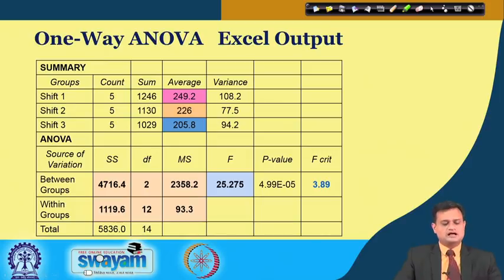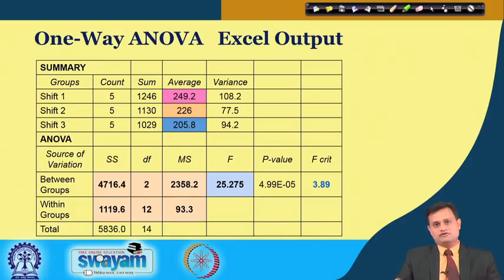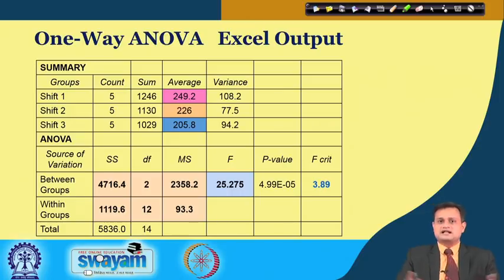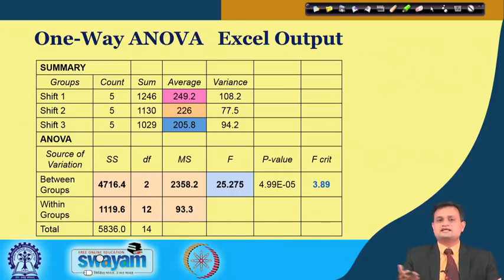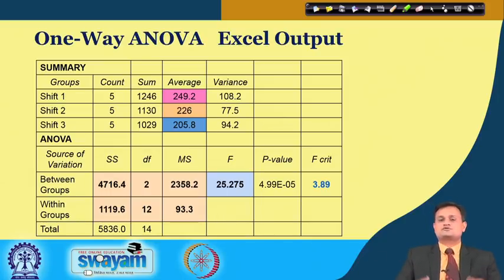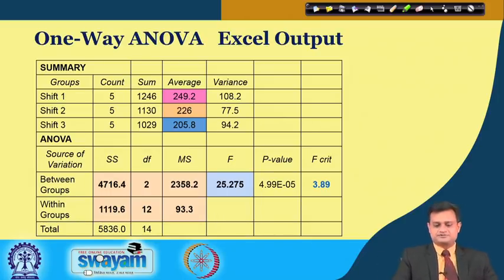You can also see the output in Excel. We will also see it in Minitab. More or less you will find a similar table constituting sources of variation, degree of freedom, sum of squares, mean sum of squares, and the computed value of F statistic.